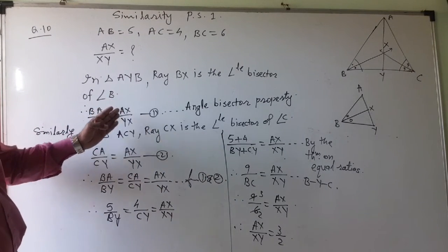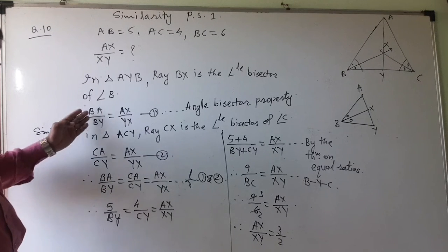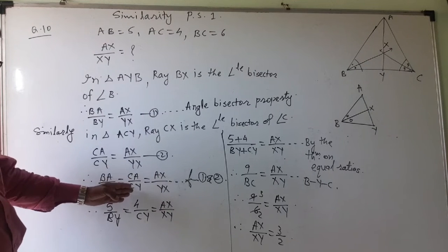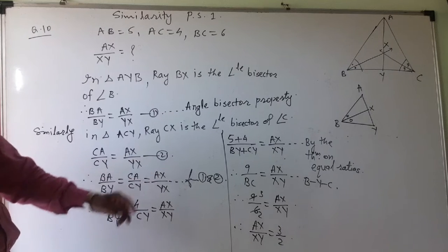If I compare all these two, their right sides are equal. Therefore, this and this is also equal. Therefore, BA upon BY is equal to CA upon CY is nothing but AX upon YX from 1 and 2.